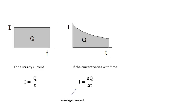For a steady current: I = Q/t. A steady current means the current doesn't change — the value is constant. A graph of current against time is just a horizontal line, and therefore the charge Q is the area under that rectangle. If the current varies with time, strictly speaking we should say I = ΔQ/Δt, and the charge that flows in a certain time gives you the average current.